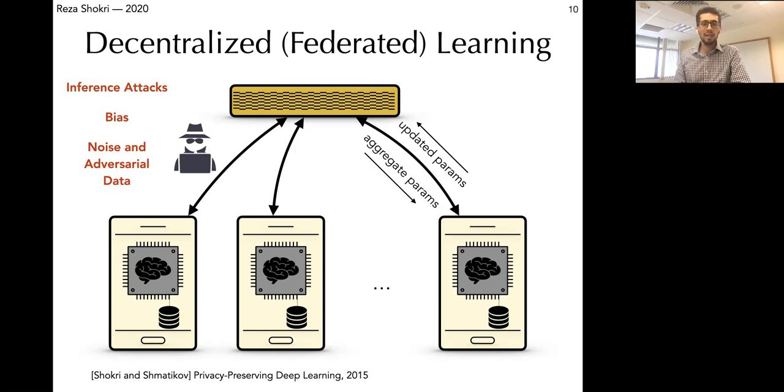Data could be biased, adversaries might inject noise which are crafted in order to add some type of backdoor decision rules into the model or damage the accuracy of the model. And participants who receive information about the others might run inference attacks to extract sensitive information about other participants' data.